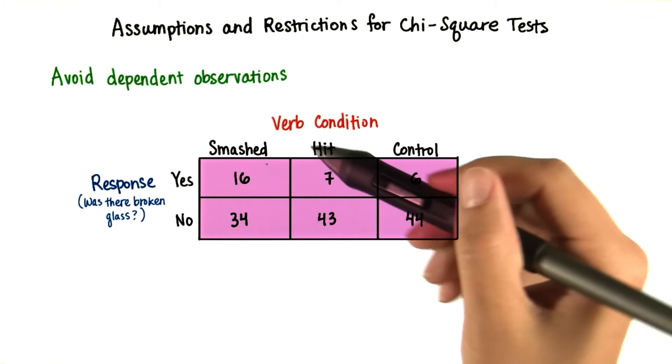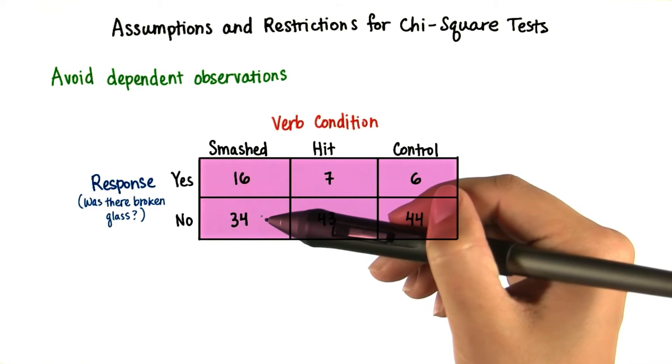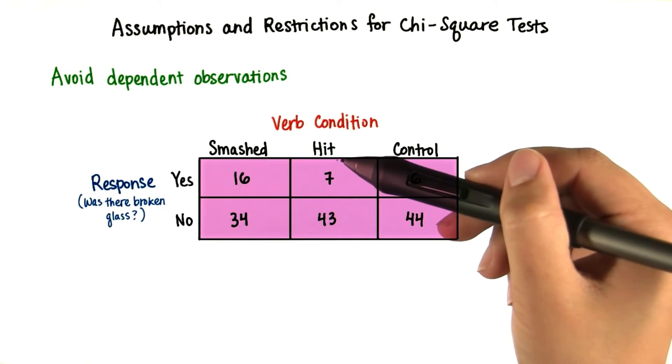For example, if they were asked both how fast were the cars going when they smashed into each other, and how fast were the cars going when they hit each other.